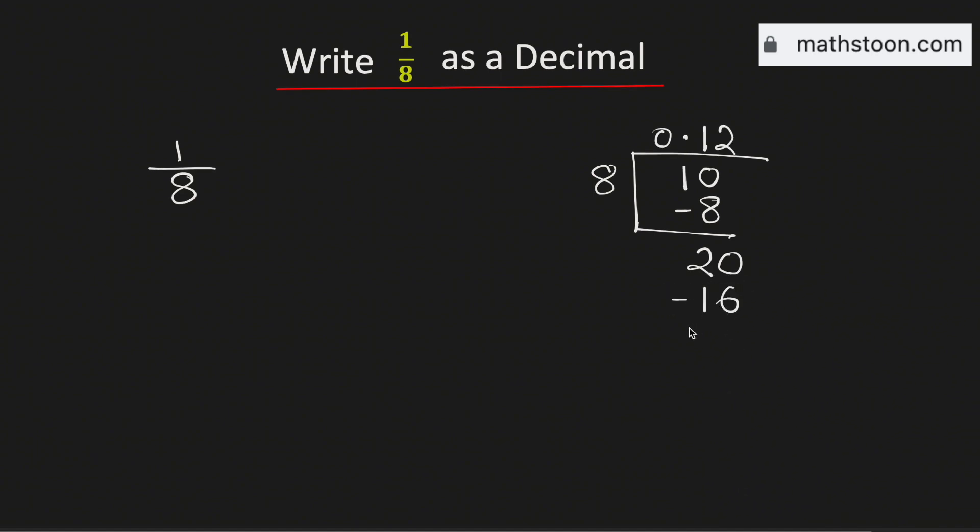Now if we subtract, we get 4. Put a 0 here and we know that 5 times 8 is 40. Now subtract, we will get nothing.